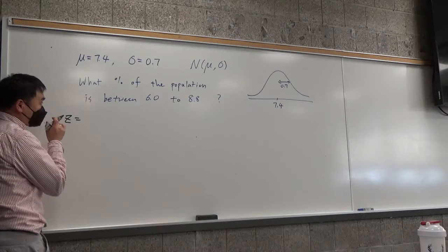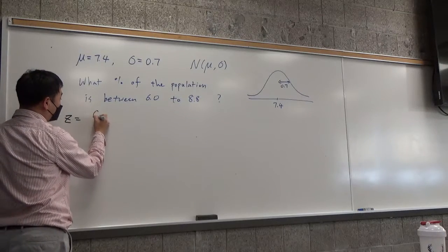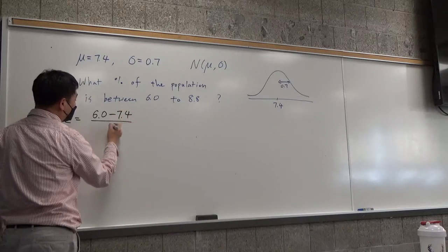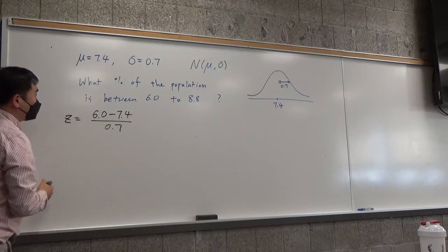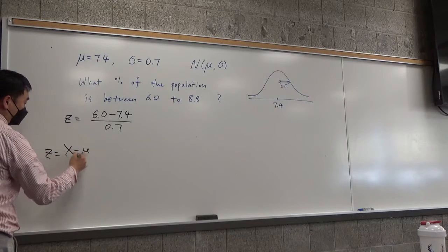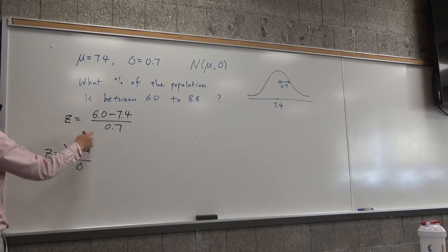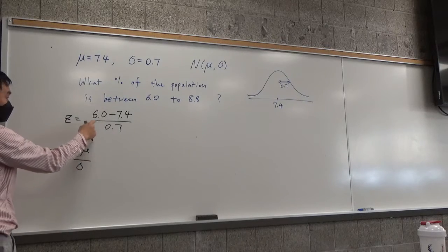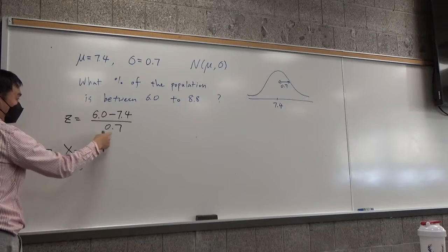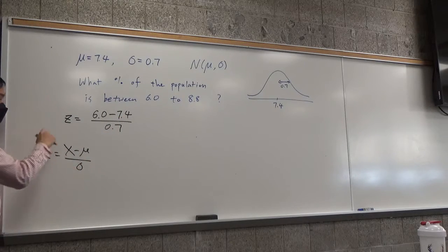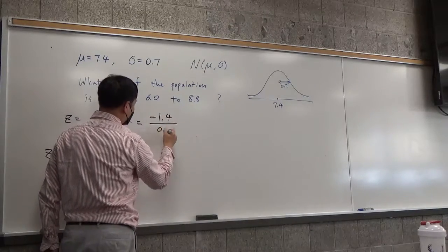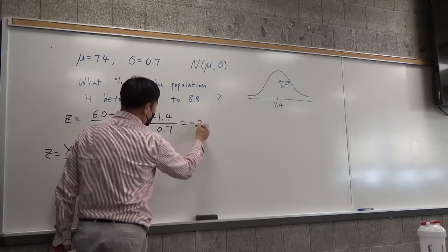All right, so let's find a z-score for each. So first of all, what's 6.0 z-score? You subtract 7.4 and divide it by 0.7. Remember, the formula for the z-score is x minus mu over sigma. And that's all I'm doing. If I want the z-score, put the 6.0 into x, mean value is 7.4, sigma is 0.7, so I just calculate this. Which is negative 1.4 divided by 0.7, so this is negative 2.